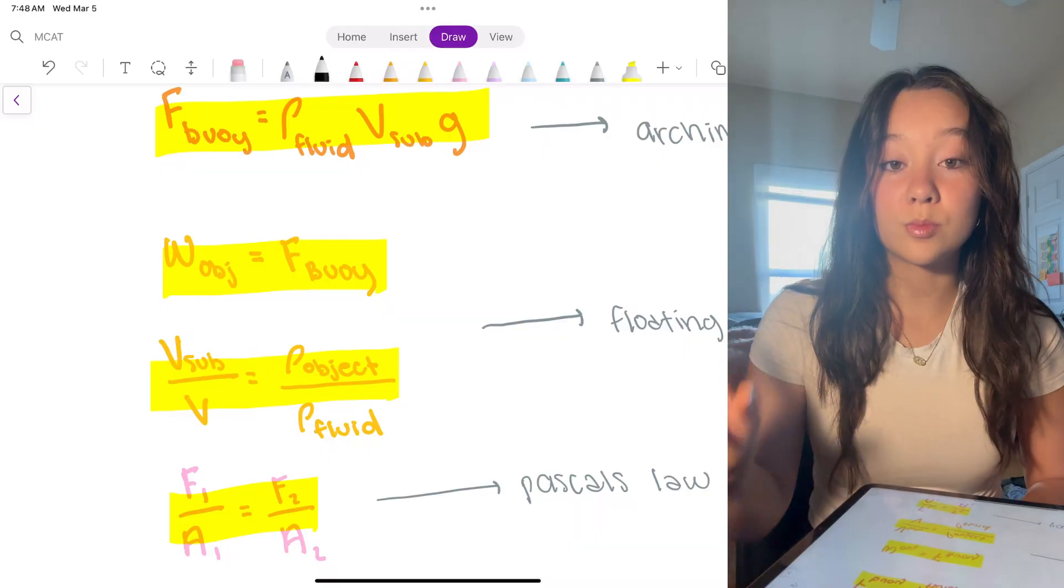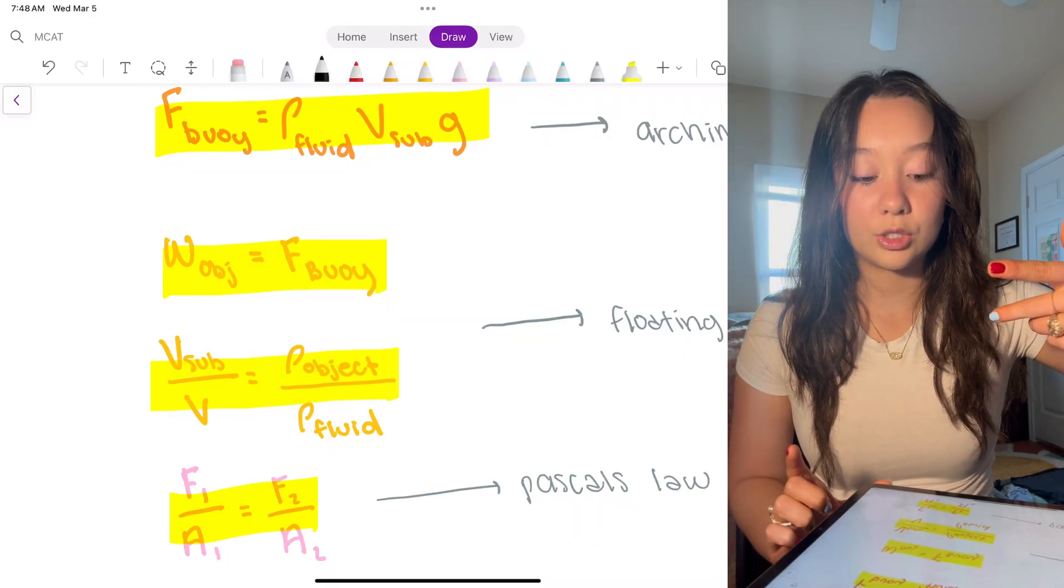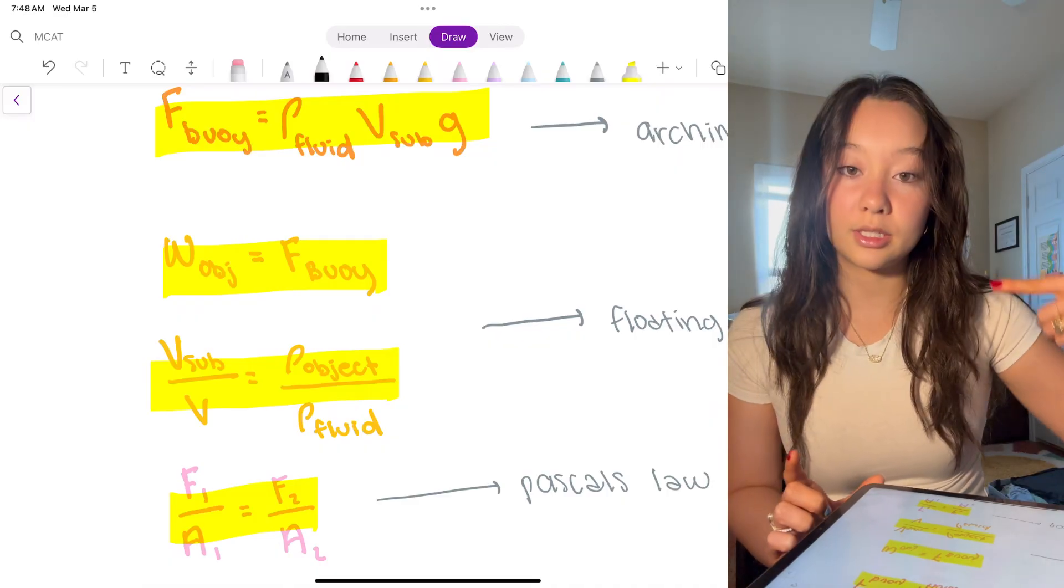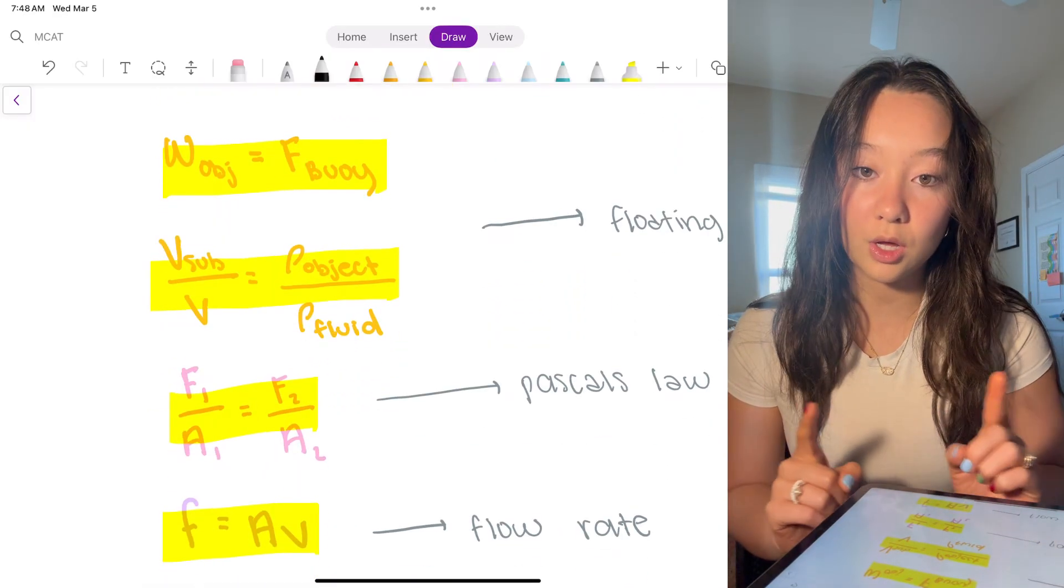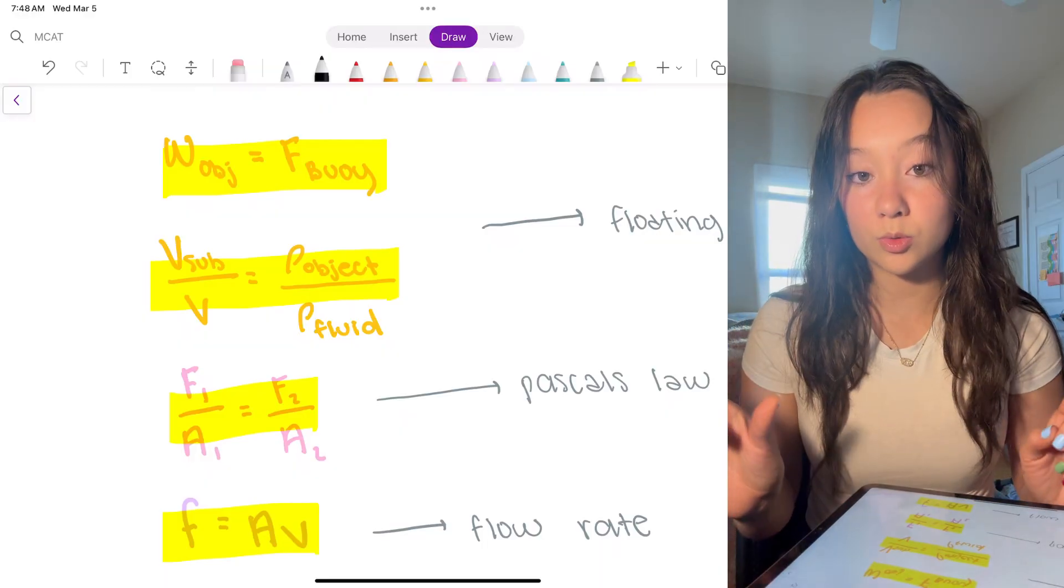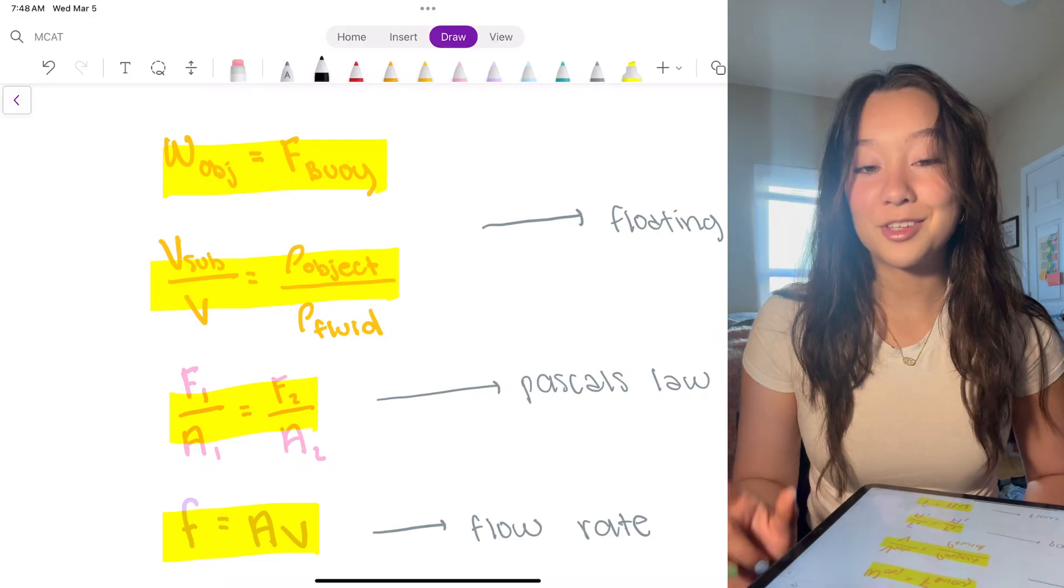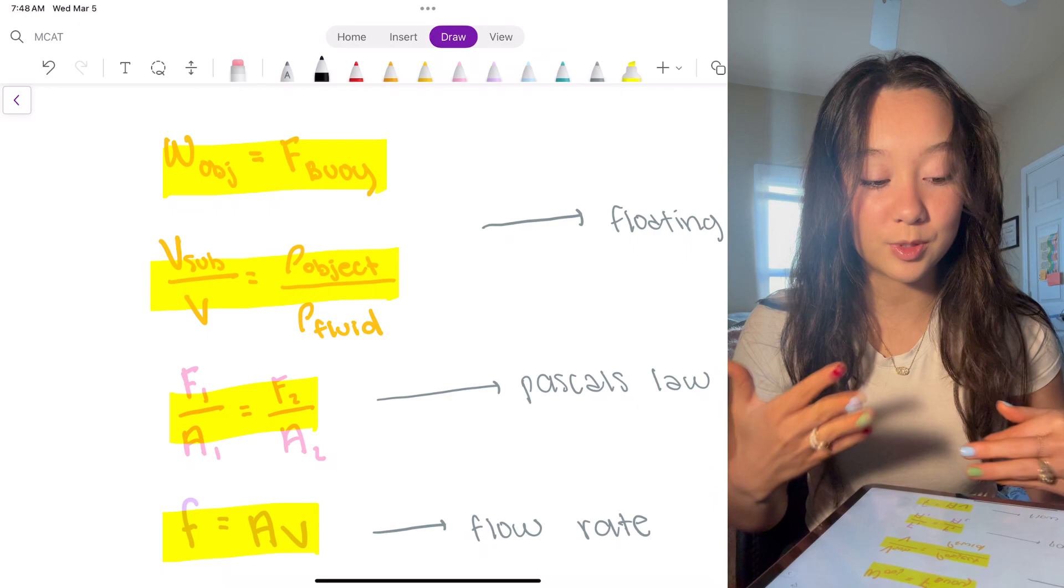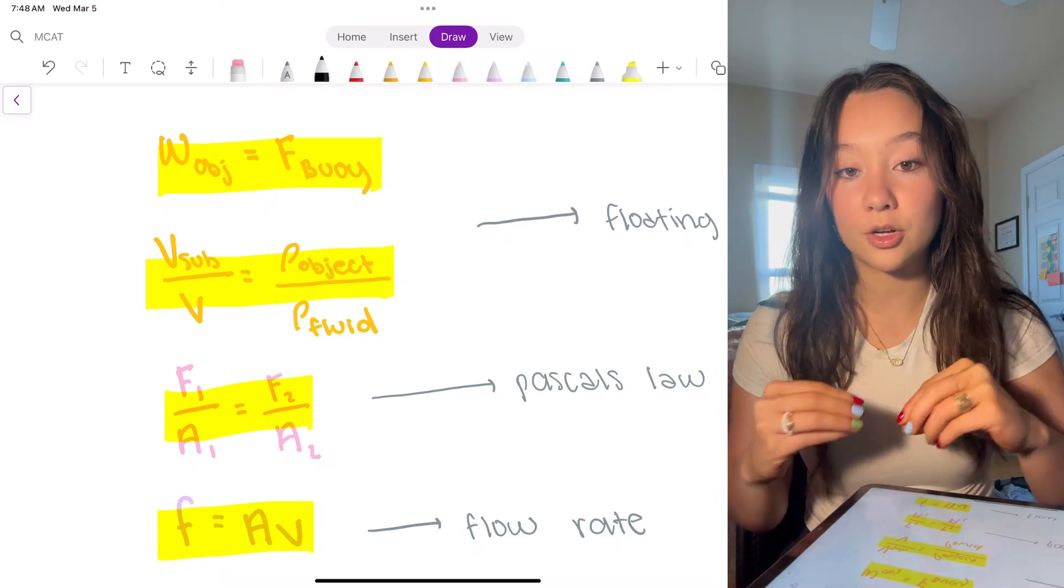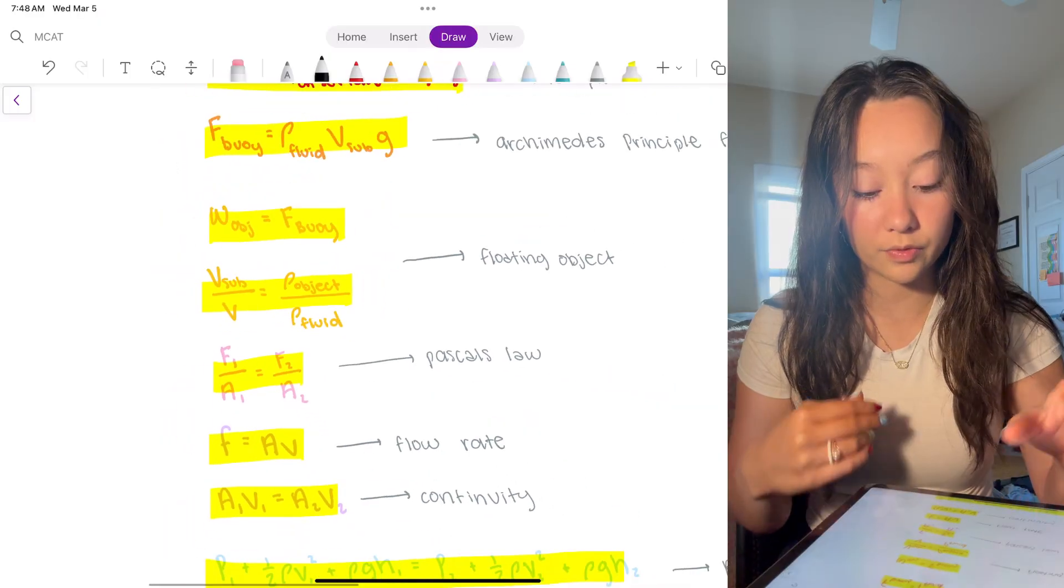This relationship right under buoyancy is important to know if you don't know how to derive the relationships between one another. So just remember that the volume submerged over the total volume is going to be inversely related to the density of the object, density of fluid. So you can see from this equation here, if the density of the object increases, the volume submerged increases, which makes sense. But if the density of the fluid increases, then the volume submerged decreases. So there's inverse relationships there. This is an important relationship to understand, not necessarily memorize, but just understanding this is good for fluid dynamics.